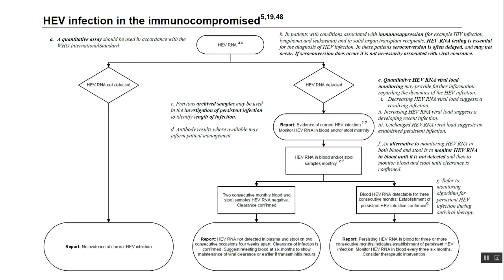If HIV RNA is not detected, you can easily report that there is no evidence of current HIV infection. But if HIV RNA is detected, it indicates that evidence of current HIV infection is present, and then you have to monitor this HIV RNA level.